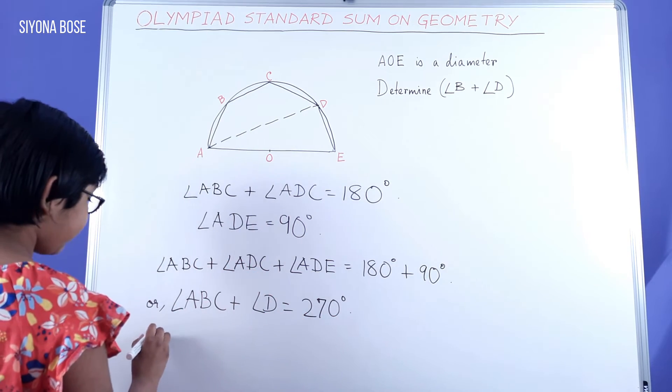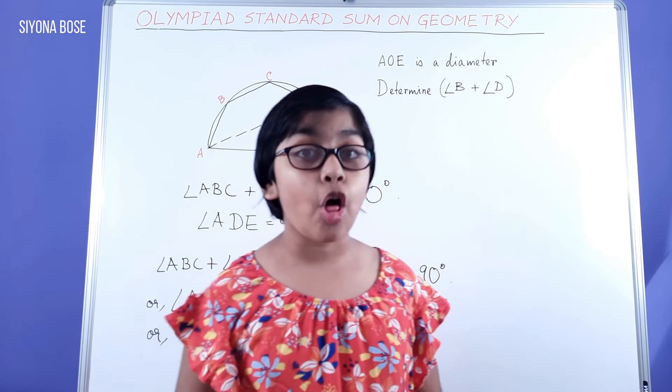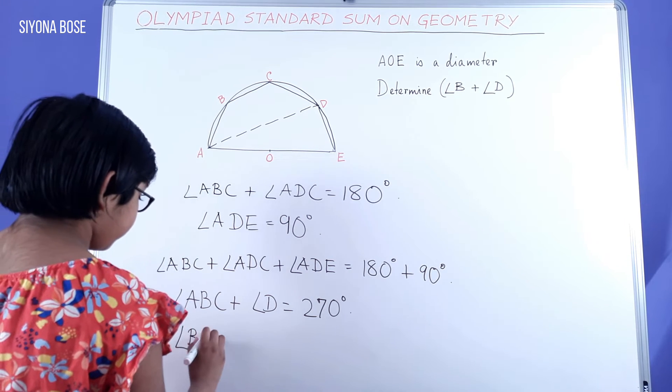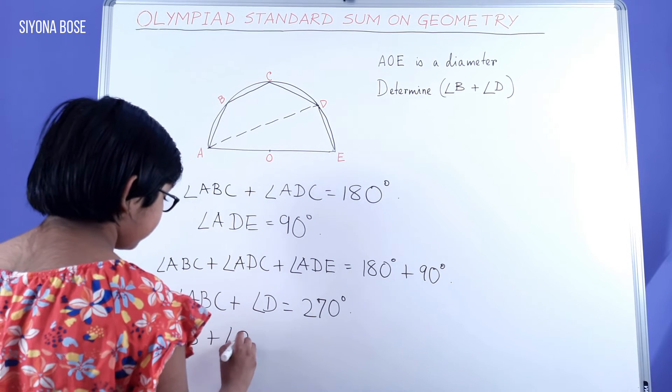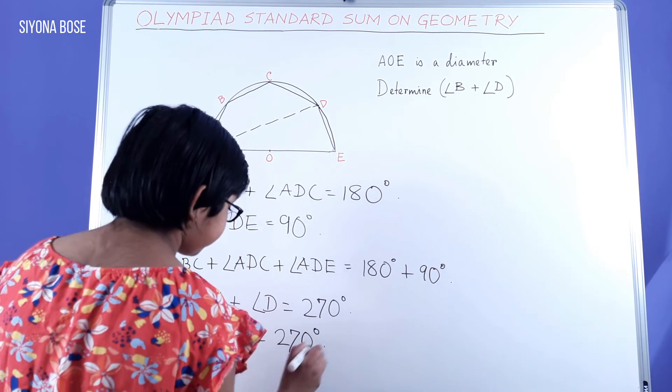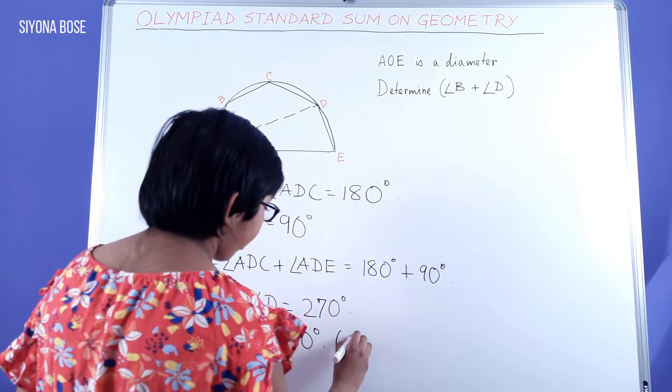And angle ABC is nothing but angle B. Or, angle B plus angle D equal to 270 degrees. And this is our final answer.